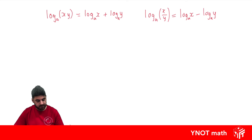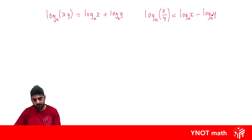Just like in indices, when we're multiplying two indices we add the powers, and when we divide two indices we subtract the powers. So they're related that way.